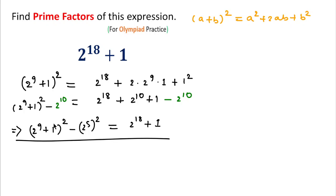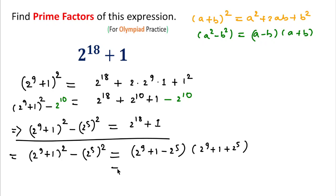Using the formula a^2 - b^2 = (a - b)(a + b), we get (2^9 + 1 - 2^5) × (2^9 + 1 + 2^5). Now 2^9 is 512, so this becomes (512 + 1 - 32) × (512 + 1 + 32). After solving, 512 - 32 is 480, plus 1 equals 481...